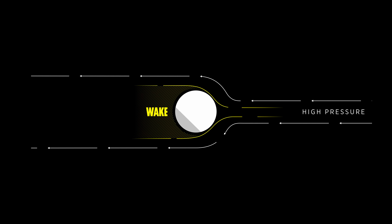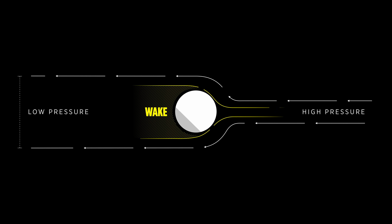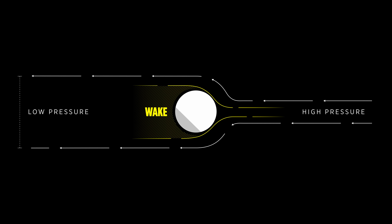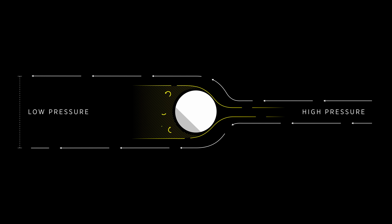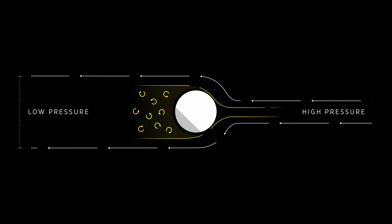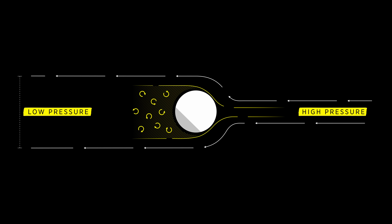Behind the ball we have an area called the wake. The wake is a region of low pressure, created because the air streams from the front of the ball travel to the top and bottom surface, ultimately separate, and leave behind this air void — this region of low pressure. It's the difference between high pressure on the front side of the ball and low pressure at the back side that ultimately causes drag and creates the force that slows the ball down.